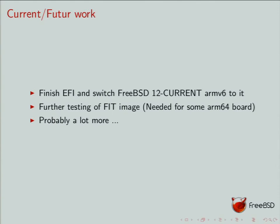Current work: I need to finish EFI and switch FreeBSD ARM and iMX6 to use it instead of UBLDR. Most of it is working — the main issue is with the SMBIOS code. I also need to test the FIT image, which is a Flattened Image Tree — a relatively new image type for U-boot. Most recent ARM64 low-end boards use FIT images to boot. I managed to boot our loader crafted inside a FIT image. We'll see whether we embed the loader in the FIT image or embed the kernel directly.